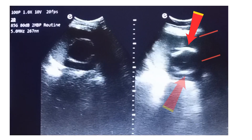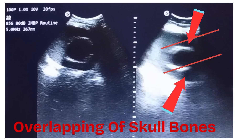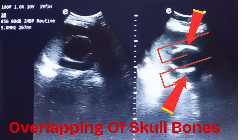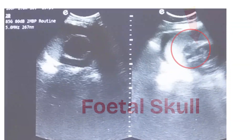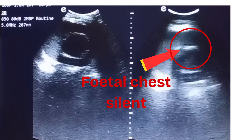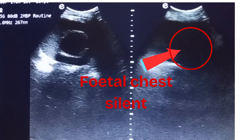This slide is very important. Here you can clearly see the fetal head skull bones overlapping, with arrows indicating the points of overlapping. Inside the red circle, the silent fetal chest can be seen.